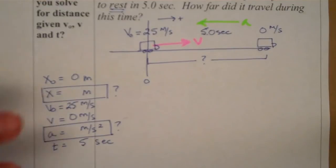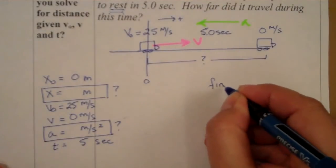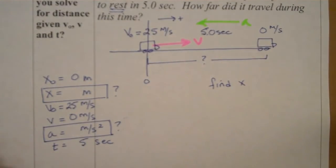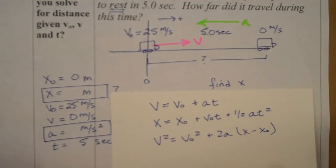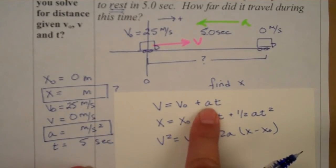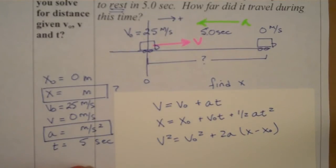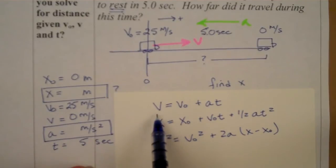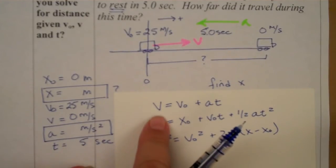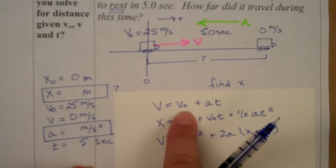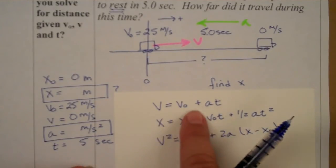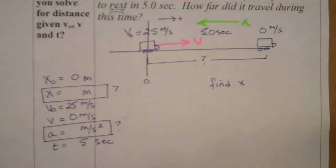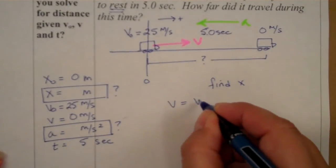It looks like we know four of our six variables. We're asked to find the final position. We have a choice of three equations, and all three have acceleration in them. So it's a good idea to solve for acceleration first using another equation. Looking at the first equation, we know final velocity, initial velocity, and time — so it has only one unknown and we can solve for acceleration.